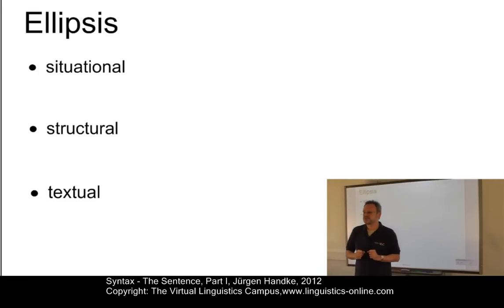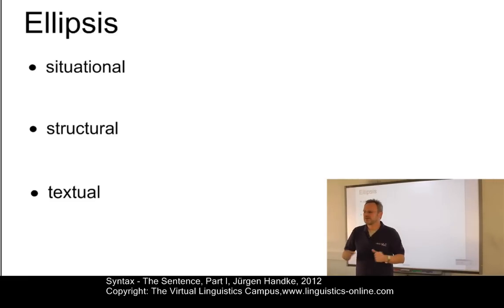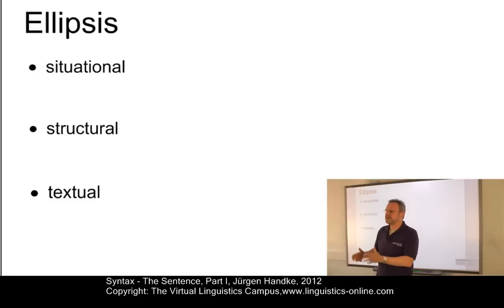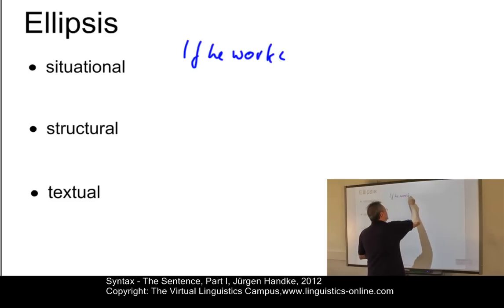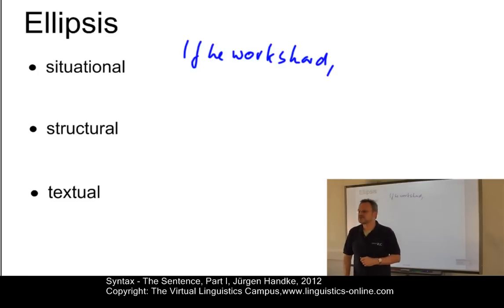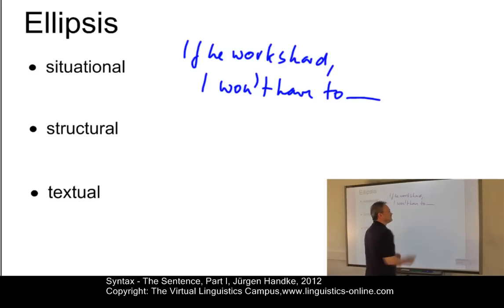Ellipsis. Now we have major sentences where elements have been omitted. Ellipsis means grammatical omission. In contrast to other types of omissions in language — for example, phonological loss or word clipping — ellipsis explains why some normally obligatory element of a grammatical sentence is missing. For example: "If he works hard, I won't have to" — what is missing at the end is, of course, "work hard."